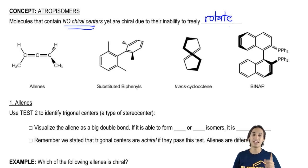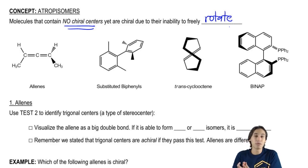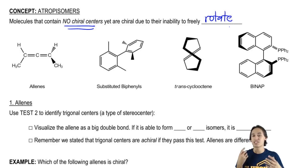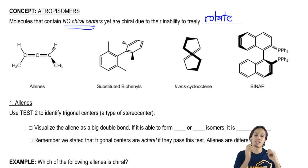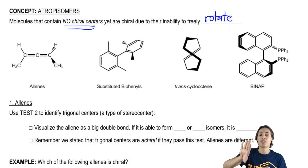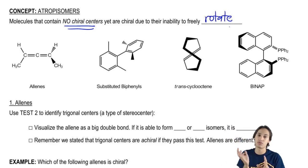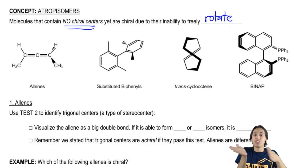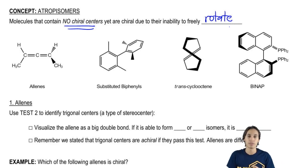Then finally, BINAP — I don't even remember exactly what it stands for — but it's very similar to the substituted biphenyl, except in this case an entire phenyl group or an entire benzene ring is acting as one of those teeth that's not going to let it rotate across that single bond.